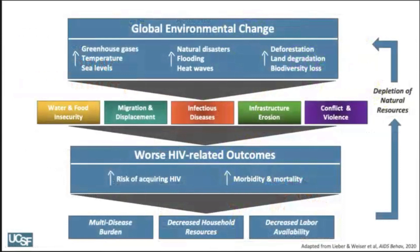Here's a conceptual framework our team developed to understand the bi-directional links between climate change and HIV-AIDS, which we've been testing empirically. At the top, you can see global environmental change — rising greenhouse gases and temperatures, rising sea levels, natural disasters and flooding. These affect both risk of acquiring HIV and worse HIV health outcomes through five pathways: water and food insecurity, migration and displacement, higher prevalence of infectious diseases, infrastructure erosion, and violence. These pathways are also related to one another — for instance, water and food insecurity can affect migration and gender-based violence.